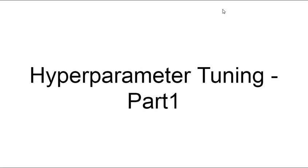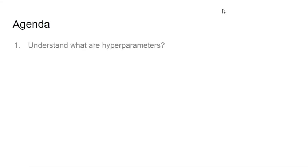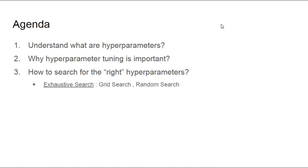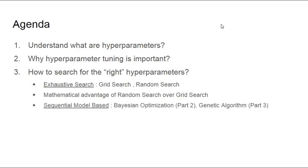In this video we will cover hyperparameter tuning. The key agendas are: understand what are hyperparameters, why hyperparameter tuning is important, we'll look at multiple examples, and we'll see what are the right approaches to search for hyperparameters. We'll look at both exhaustive search in this part, and in the subsequent part we'll also look at Bayesian optimization and genetic algorithm.